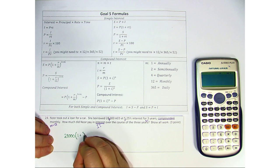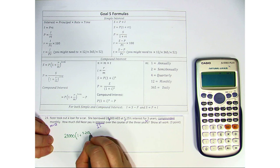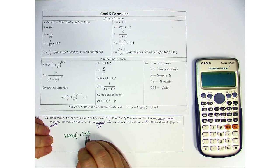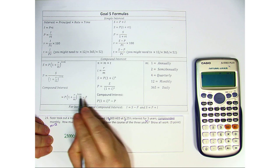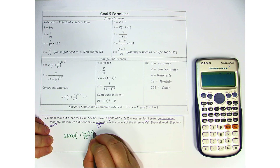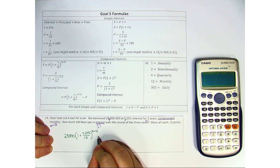my rate is 5.25%, divided by my M, which is 12, close bracket, raised to the T times M. So three years times 12 times a year.